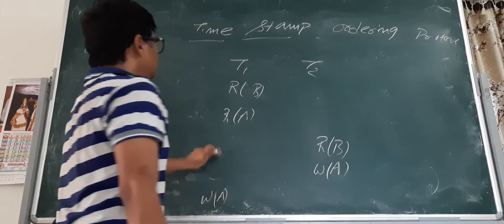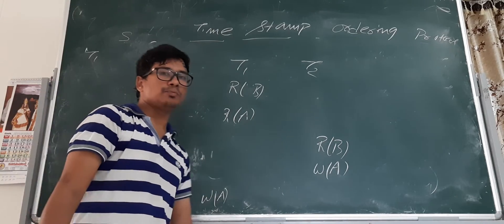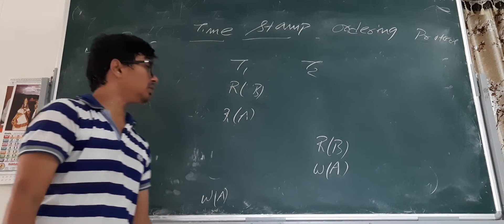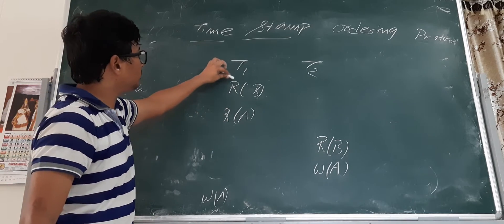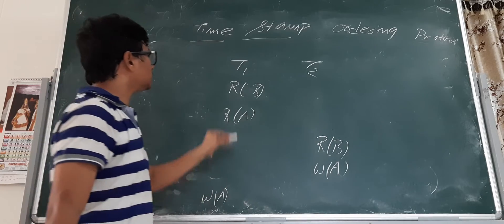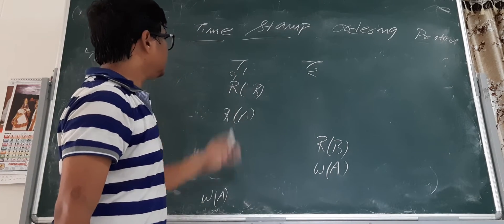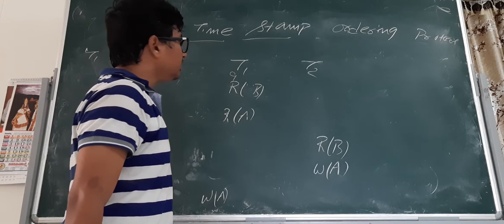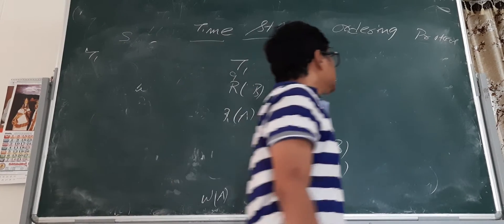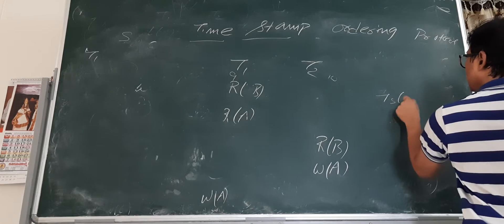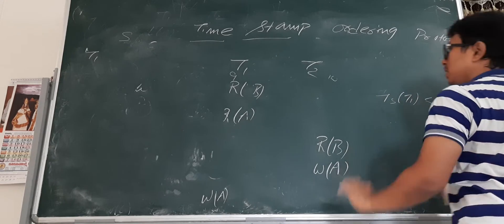Let me give another example. We will check whether this schedule is following the timestamp ordering protocol. In this system, transaction t1 has executed first, so t1 will have a timestamp of 9, or any value. The key point is that timestamp of t1 is less than timestamp of t2.